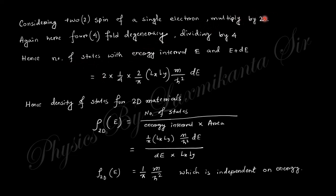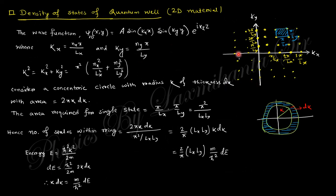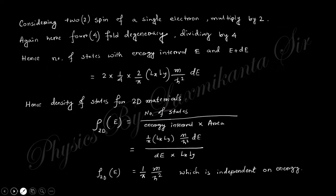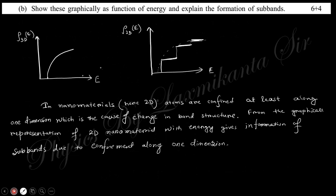Consider the fourfold degeneracy: divide by 4 because there are four coordinates with the same energy value but different k values, and multiply by 2 due to the spin of the electron. Finally, we obtain this expression. The density of states is the number of states divided by this, so finally we obtain a constant value which is independent of energy.